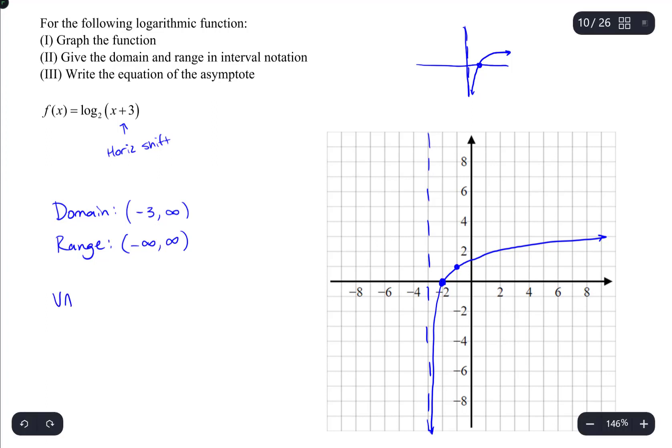Now the equation of the vertical asymptote, the equation of any vertical line has the form x equals some constant, and the constant is the x value that the vertical line passes through, and that is at negative 3. So the equation of my vertical asymptote is just x equals negative 3.